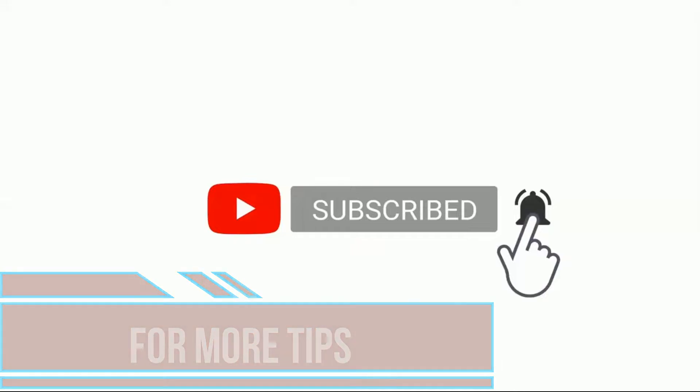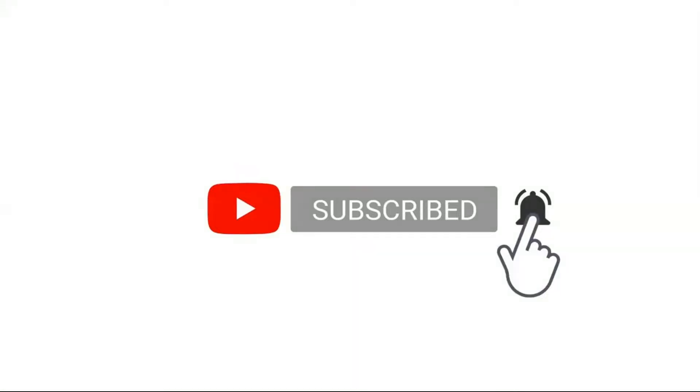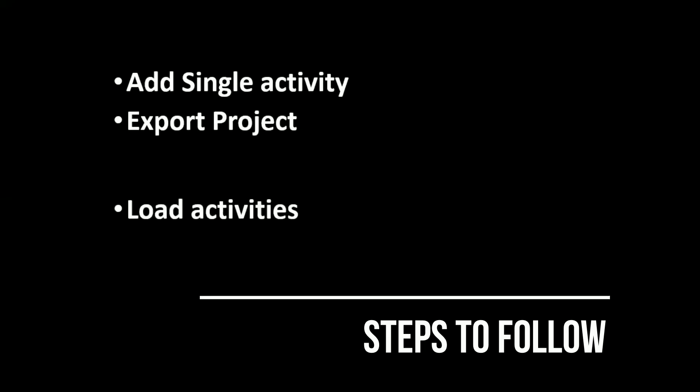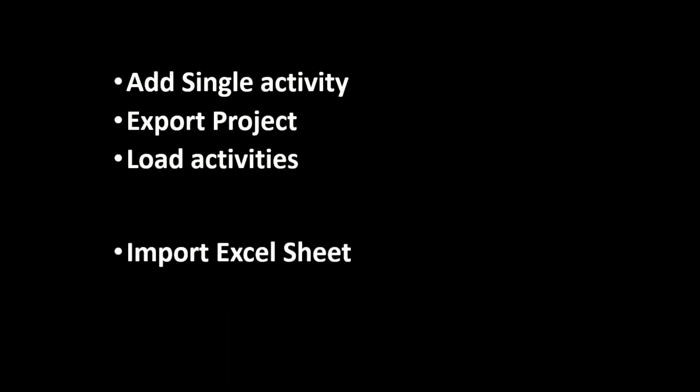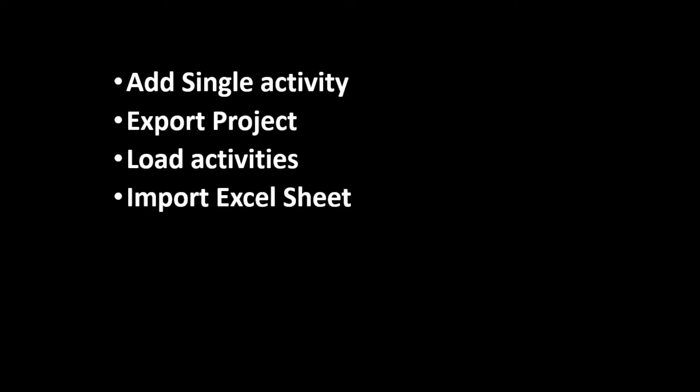This methodology can be executed in certain steps: first you have to add a single activity in your newly generated project in Primavera 6, then export that project in Excel format, then load activities into that Excel format, and finally import that Excel sheet back to Primavera 6.